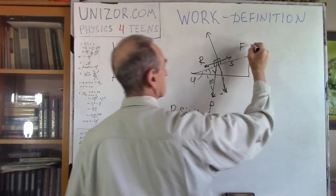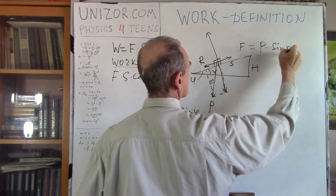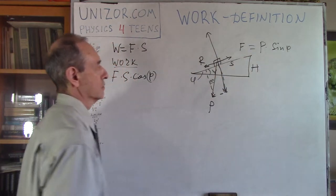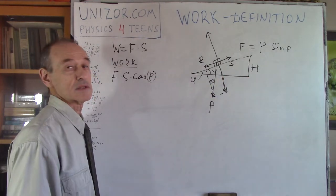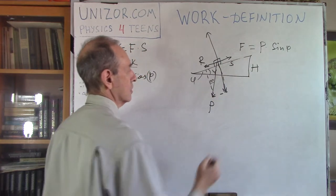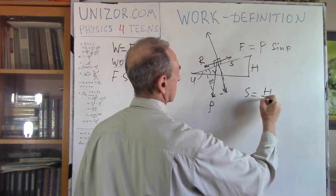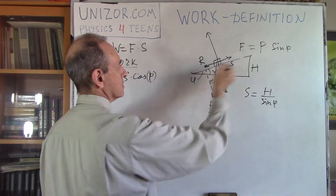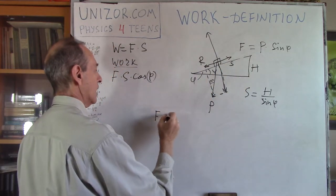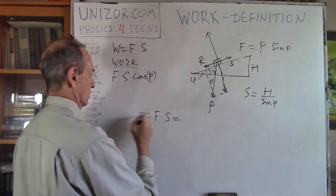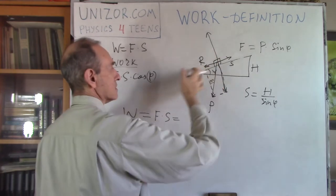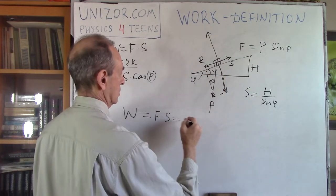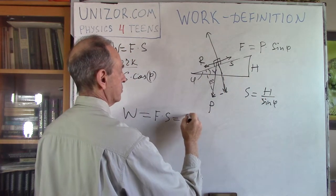So my force F equals P·sin(φ) by magnitude. The distance I have to cover along the incline to reach height H is S = H/sin(φ). Now F times S equals W — work, by definition — the force acting along the distance S. And it equals P·sin(φ) × H/sin(φ), so sine cancels out and we get W = P·H.